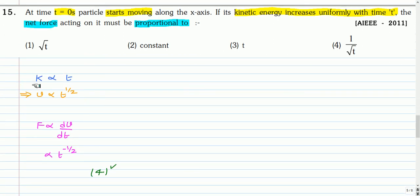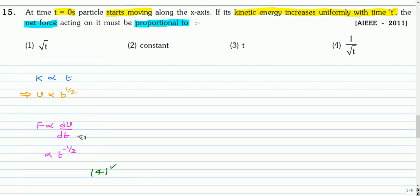Since kinetic energy increases uniformly with time, KE ∝ t. And since KE = (1/2)mv², we get v ∝ t^(1/2). Force equals mass times acceleration, and acceleration = dv/dt. Since v ∝ t^(1/2), differentiating gives a ∝ t^(−1/2). Therefore, force is proportional to t^(−1/2), i.e., 1/√t. The correct option is option 4.